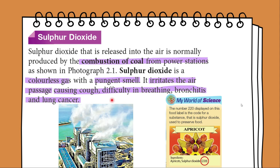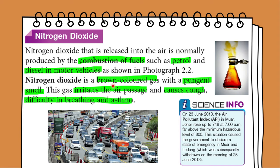Too much sulfur dioxide can cause an upset stomach. Nitrogen dioxide released into the air is normally produced by the combustion of fossil fuels such as petrol and diesel. Unlike sulfur dioxide, nitrogen dioxide is a brown coloured gas but also comes with a pungent smell. Nitrogen dioxide irritates the air passage and lung tissues. It causes cough, difficulty in breathing and asthma.